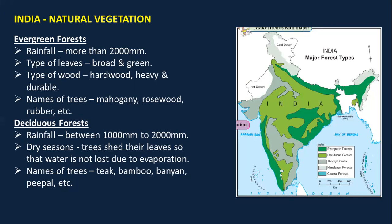The next type is deciduous forest. Deciduous forest requires a rainfall of 1000 to 2000 mm. During the dry season — basically the summer season — the trees shed their leaves so as to avoid evaporation. We know evaporation takes place during summer from the leaves, so they simply drop the leaves. The types of trees here are teak, bamboo, banyan, peepal, etc.